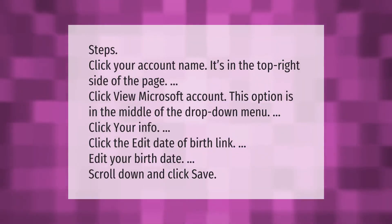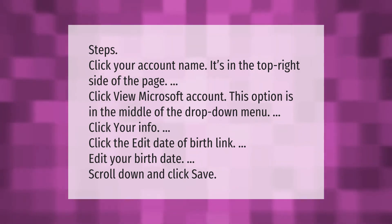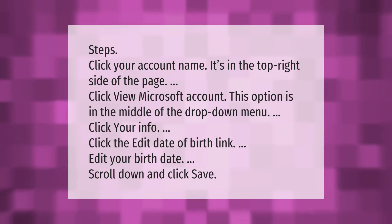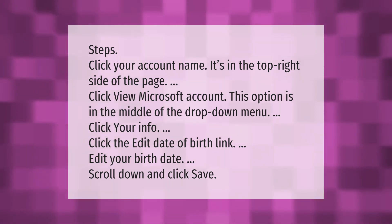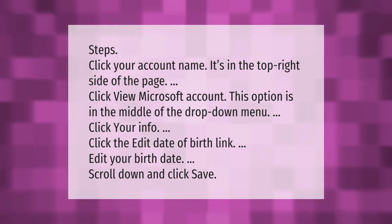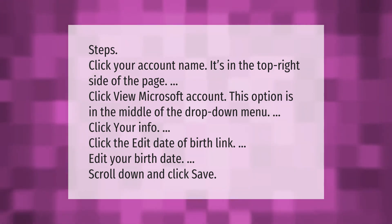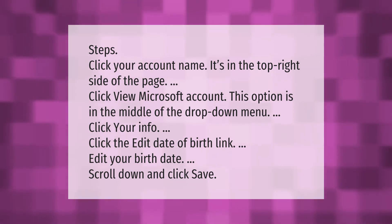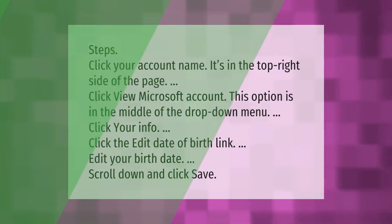Click your account name in the top right side of the page. Click View Microsoft Account — this option is in the middle of the drop-down menu. Click Your Info, then click the Edit Date of Birth link. Edit your birth date, scroll down, and click Save. Thank you for watching — please subscribe and hit the bell notification.